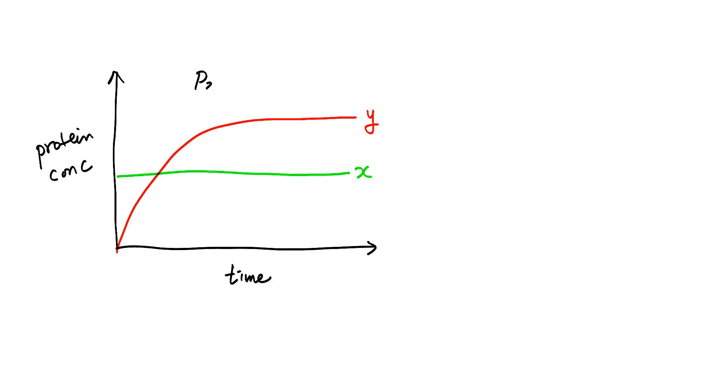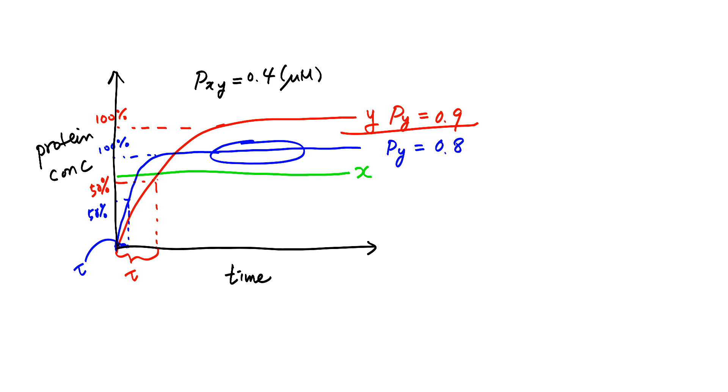Now let us fix P sub XY value to 0.4. And let us decrease this degradation parameter P sub Y from 0.9 to 0.8. And what will happen is this - we will have a decreased steady state level and also decreased response time. This is 100%, this is 50%. For this case, this is the response time tau. And for the blue line, this is 100%, and this is 50%. And the response time is this, which is tau for the blue line. So we see that not only the steady state level decreases, but also response time decreases as well. So P sub Y degradation parameter affects both steady state level and response time.